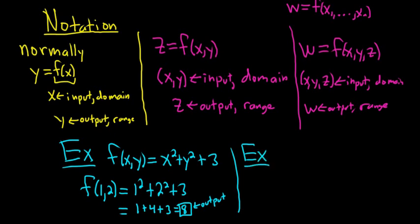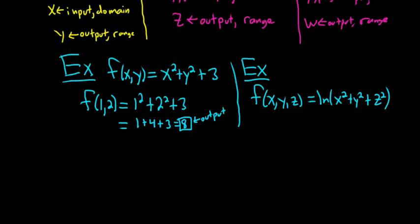Let's look at another example so we see how this works. How about f of x, y, z equal to the natural log of x squared plus y squared plus z squared. And let's look at f of 1, 2, 3.